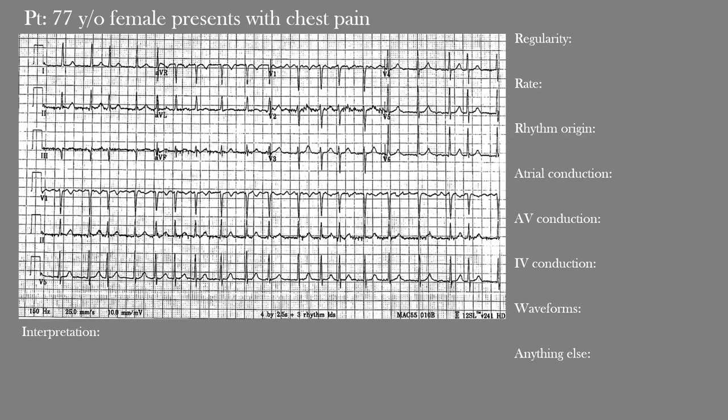On the right side of the screen are the areas I want us to go through. First, you will try to do this on your own and then we'll review it together. The first step is regularity — are we dealing with a regular or irregular rhythm? Then there's the heart rate. Then we have the rhythm origin — where is the rhythm actually starting from within the heart? Then we get into conduction: atrial, AV (atrioventricular), and intraventricular conduction, looking at whether conduction is prolonged or not. Then we look at the waveforms, which include all the waves, segments, and intervals. Then we note anything else we may have missed, and finally we give an interpretation of the EKG.